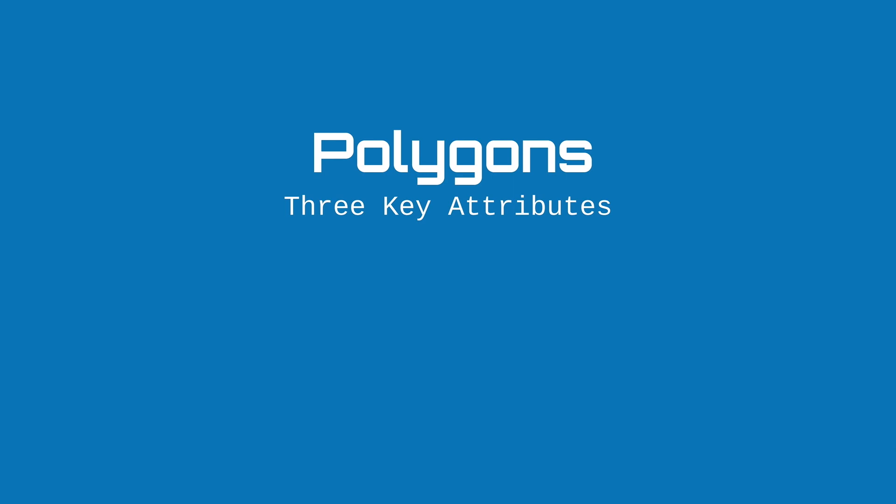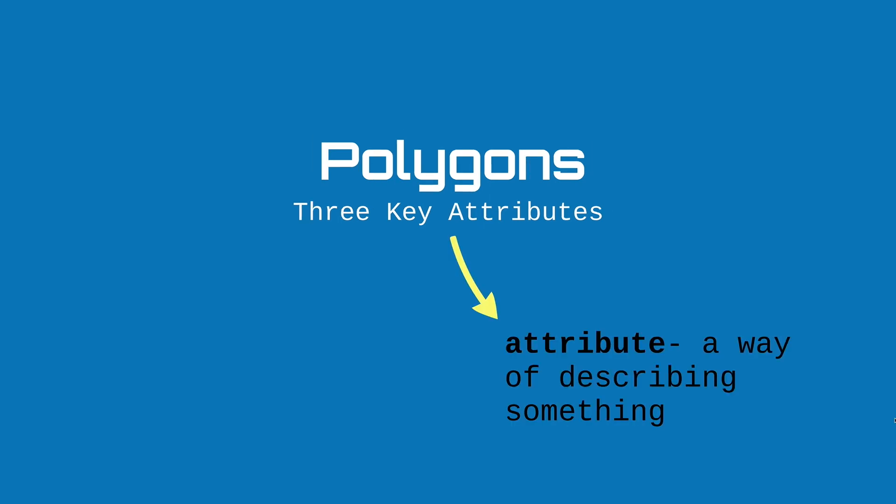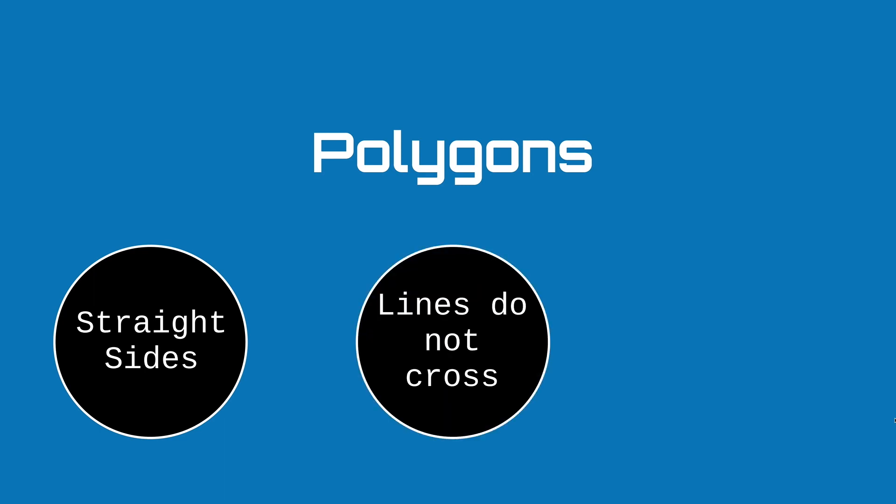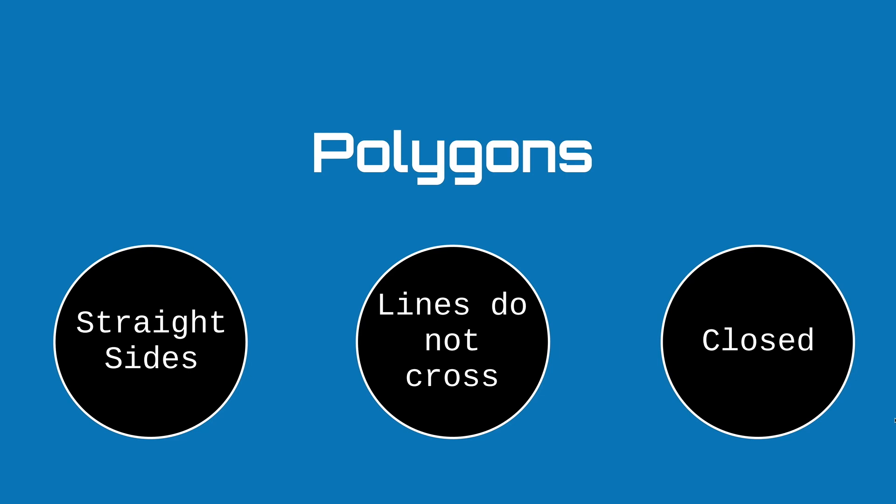Polygons are shapes that have angles, and there are three ways that we can know a shape is a polygon. Polygons have three key attributes: they have straight sides, the lines do not cross, and it is a closed shape.